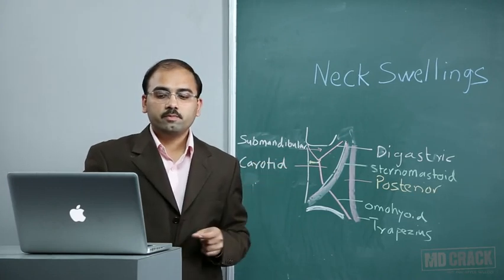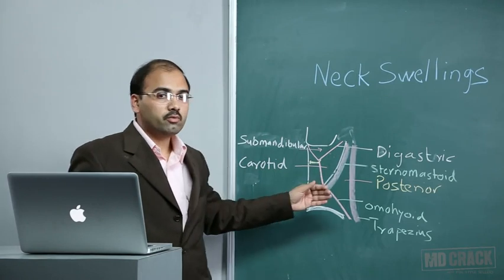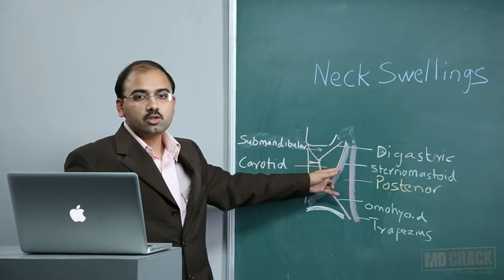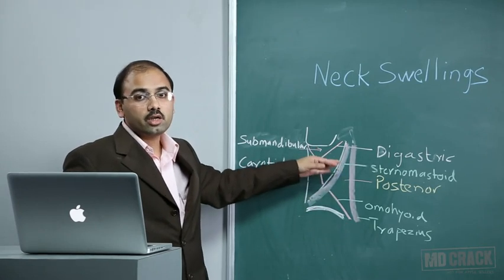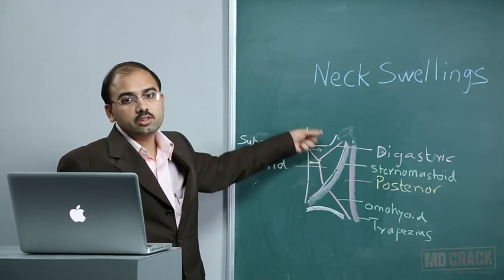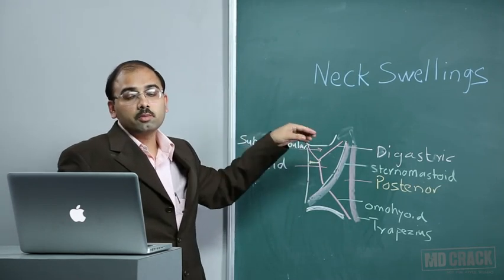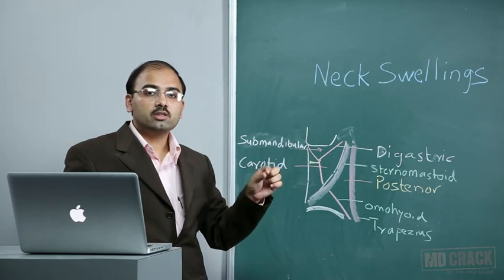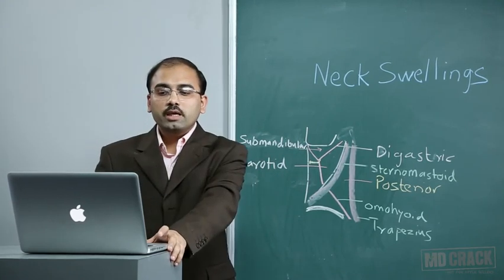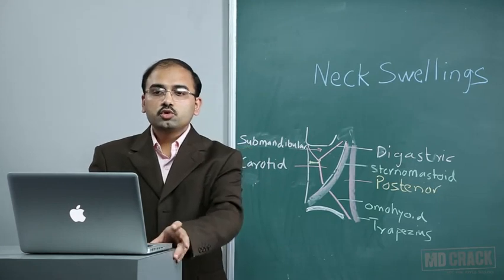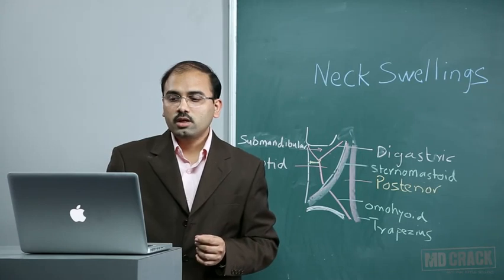The treatment of choice for branchial fistula is excision by step-ladder incision pattern — starting from the external opening, then making additional incisions as the tract is followed deeper around carotid vessels.